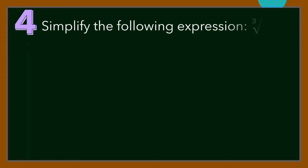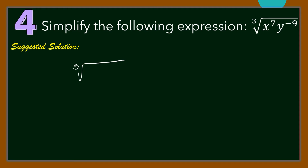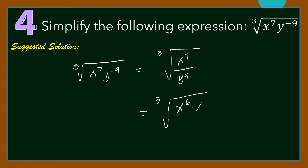Number 4: Simplify the following expression — cube root of x raised to 7 times y raised to negative 9. For our solution, we have cube root of x raised to 7 times y raised to negative 9, equal to the cube root of x raised to 7 over y raised to 9. x raised to 7 is equal to x raised to 6 times x, while y raised to 9 is y cubed raised to the third power. Then simplifying this expression, we get x squared times cube root of x, over y cubed.